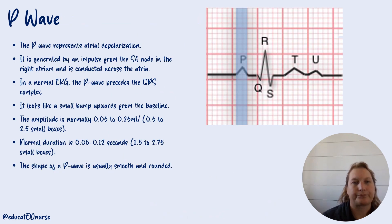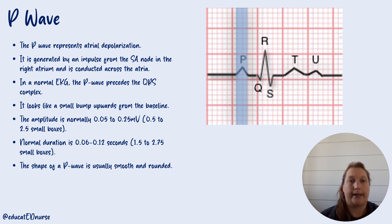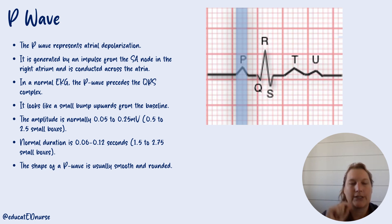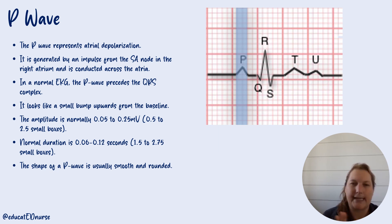The P wave is atrial depolarization — when the atria is going to contract. It's generated from the SA node in the right atrium, and that electricity goes across the atrium to the AV node. In a normal EKG, the P wave is going to precede the QRS. There should be a P wave before every QRS. It looks like a small bump; the amplitude is normally 0.05 to 0.25. The duration is not longer than 0.12 seconds — that's three boxes — and it's usually nice and smooth and rounded.